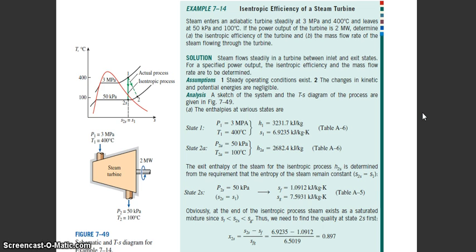This is an example solution based on isentropic efficiency. I choose turbine as an analysis device. Look at the question: steam enters an adiabatic turbine steadily at 3 megapascal and 400 celsius.